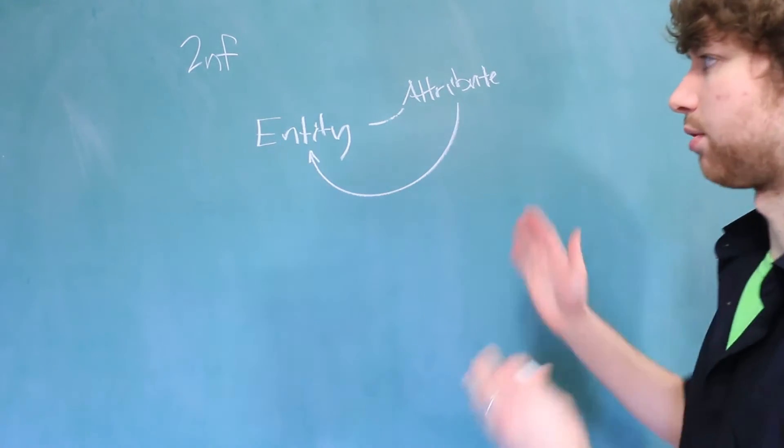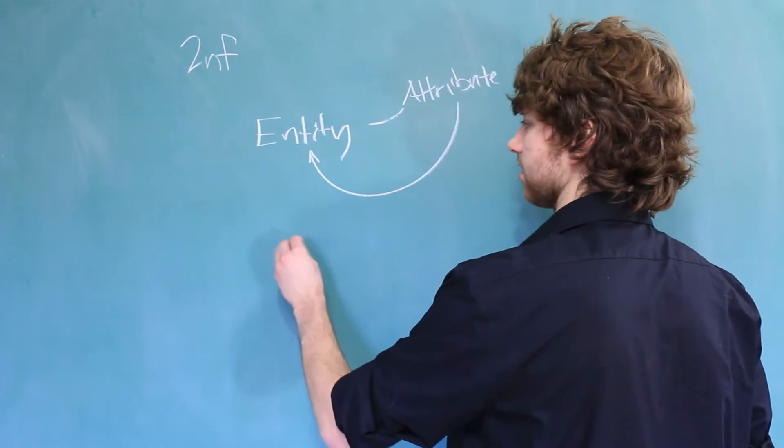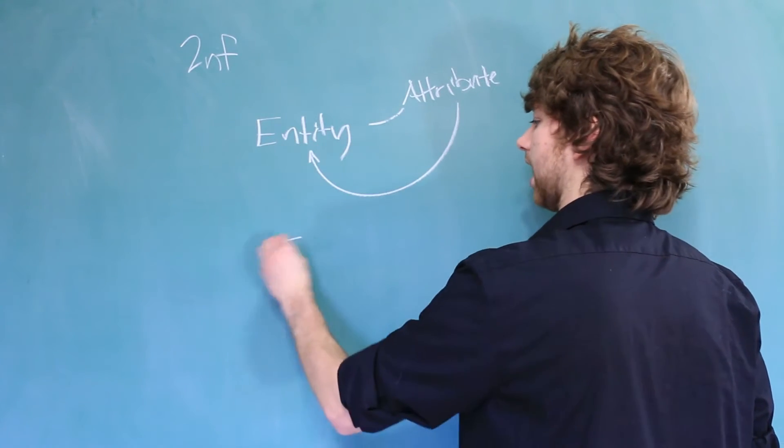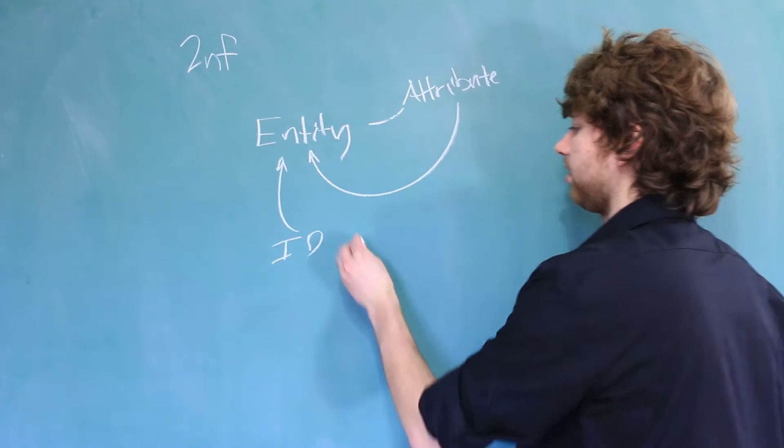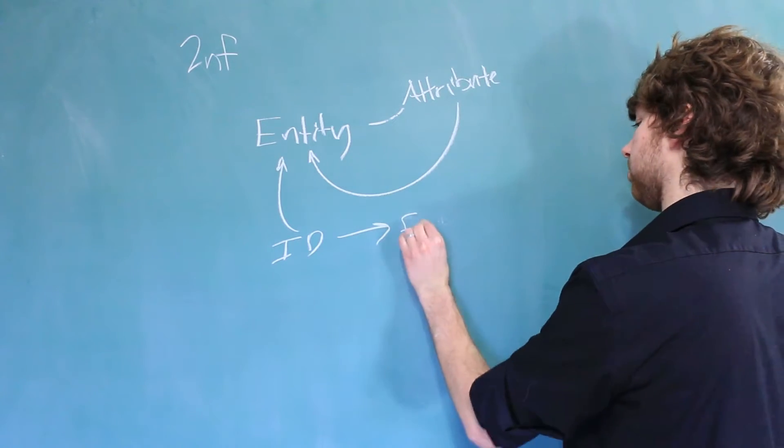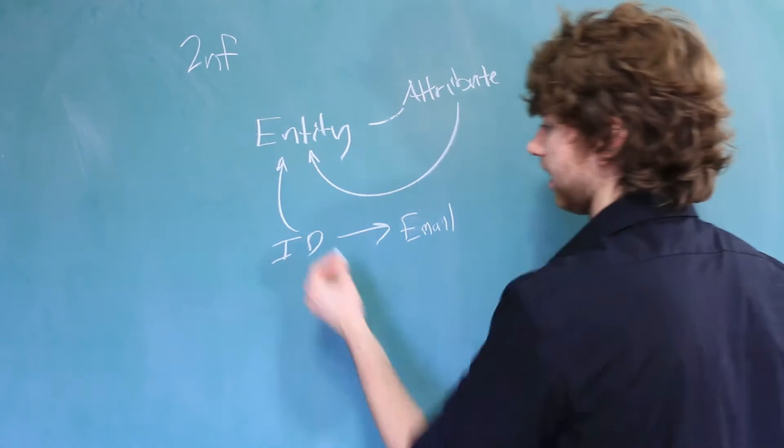Now when we're drawing this, you often see it as like, let's say, the ID, right? So the ID describes the entity. Then we have the email for example. The email depends on the ID.